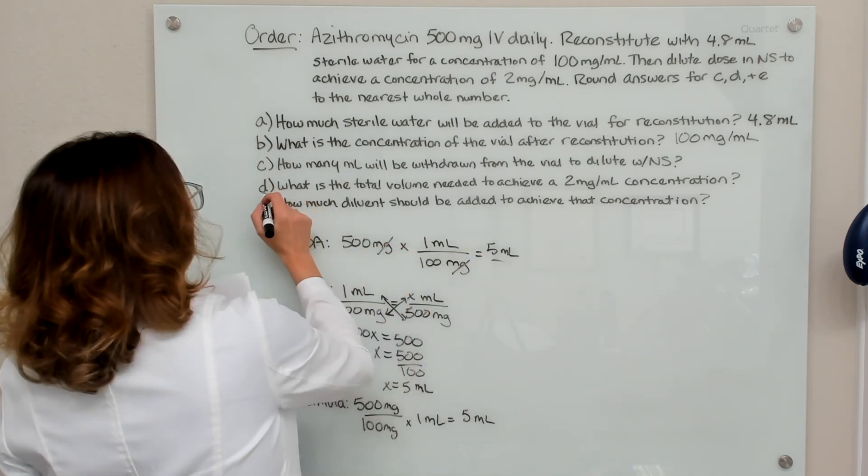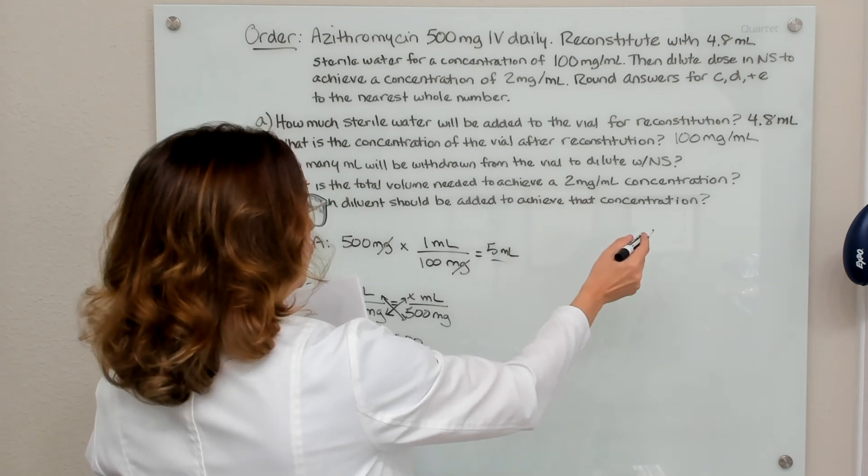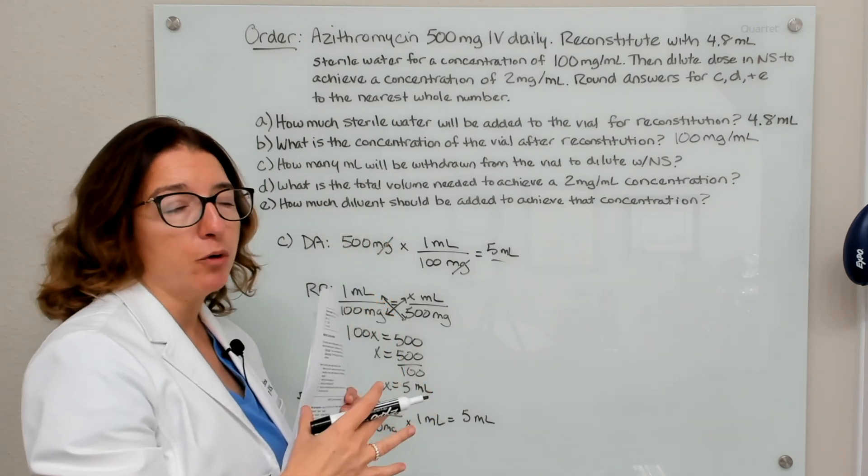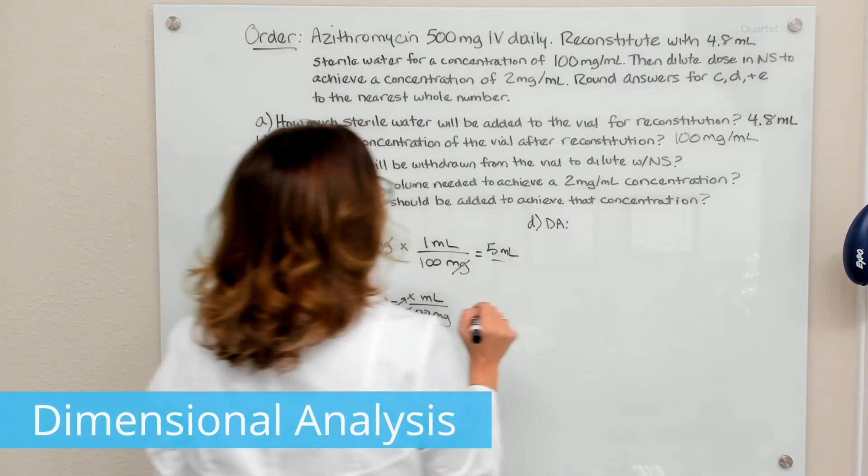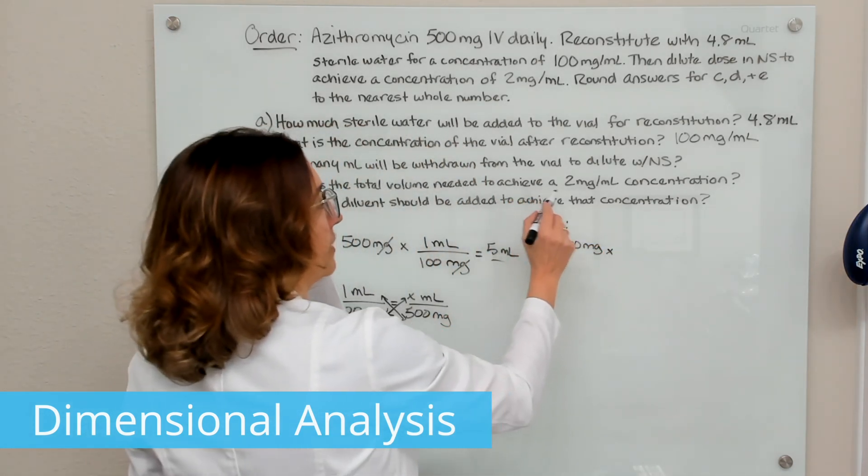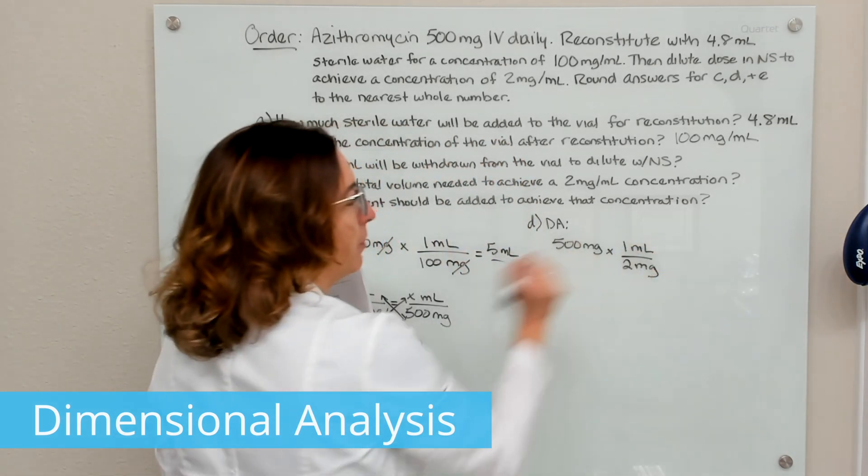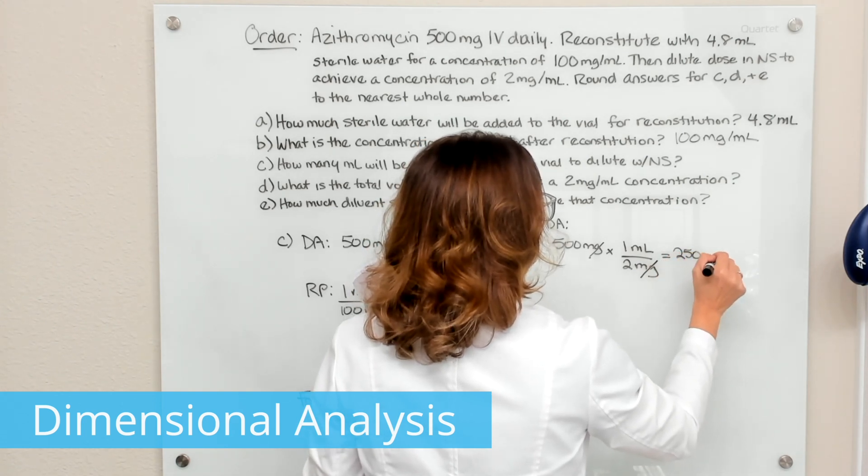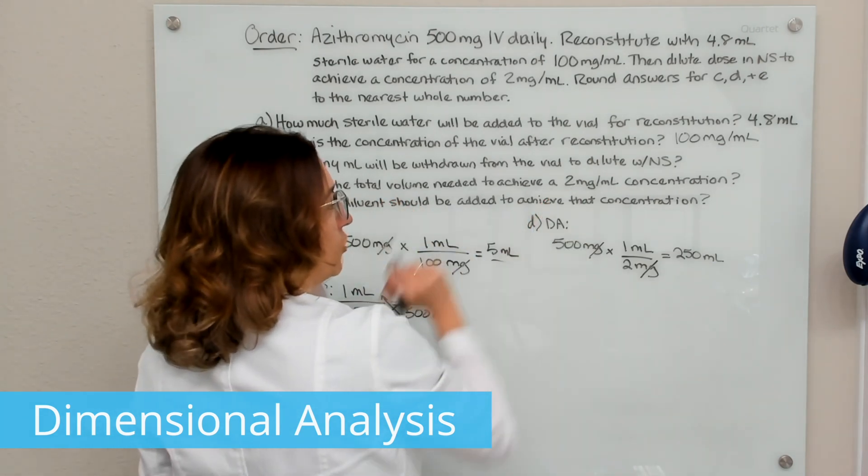Now let's look at part D. Part D is asking us, what is the total volume needed to achieve a two milligram per milliliter concentration? So we can work this part of the problem out using dimensional analysis and ratio and proportion, but not the formula method. So this is part D with dimensional analysis. If I take my ordered dose, which is 500 milligrams and multiply this times the desired concentration. So one milliliter over two milligrams, making sure I put my milliliters on top and milligrams on bottom, such that my milligrams will cross off, then I end up with 250 milliliters. And that is the total volume I need to make sure my dose is in, in order to achieve that concentration.